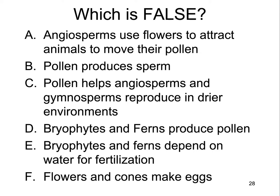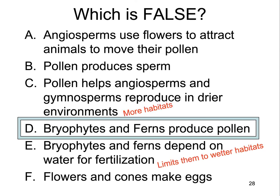For the quiz question asking which statement is false: the answer is that bryophytes and ferns produce pollen — that is false. Bryophytes and ferns do not produce pollen; only angiosperms and gymnosperms are capable of producing pollen. Bryophytes and ferns produce sperm, not pollen. An important trend: pollen allows angiosperms and gymnosperms to reproduce in drier habitats, whereas bryophytes and ferns, depending on water for fertilization, are limited to wetter habitats.